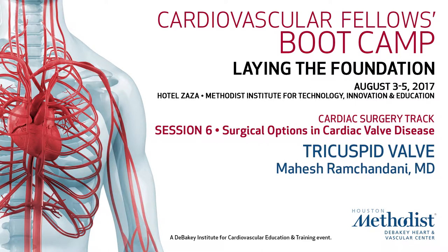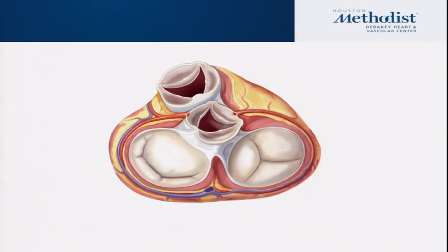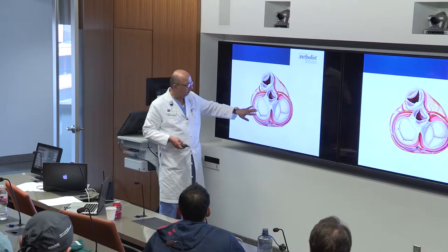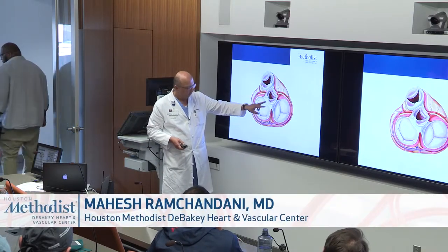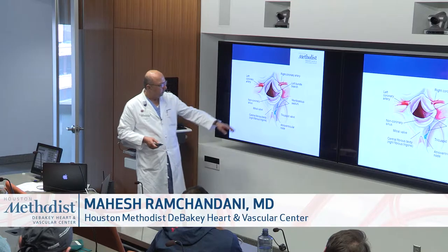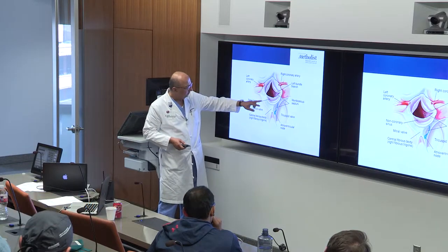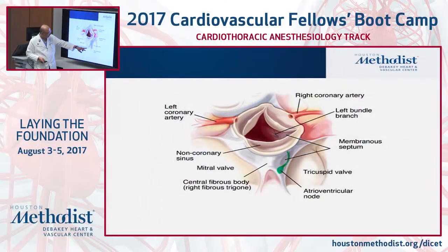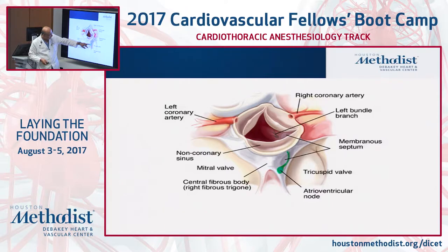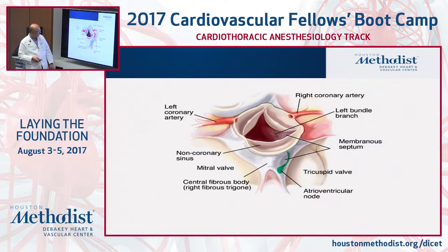A look down at the four valves of the heart: the pulmonary valve, the aortic valve, the mitral valve, and the tricuspid valve. If you look at the relationship of the tricuspid valve to the aortic valve, you'll see that it's closely related to the central fibrous body or the right trigone of the heart. The membranous septum is right there, and you have the atrioventricular node in relation to one side of the septal leaflet of the tricuspid valve.